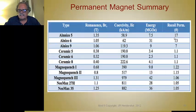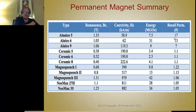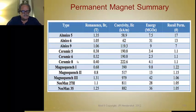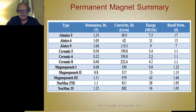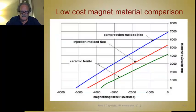Here's another summary of the various grades of magnets — Alnico, ceramics, bonded magnets, and neodymium — showing energy products, recoil permeabilities, coercivity, and remnant flux values.